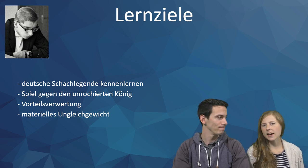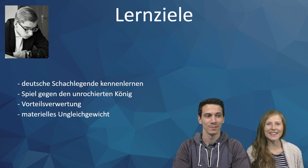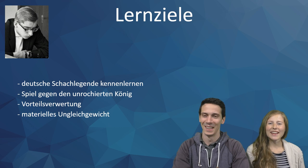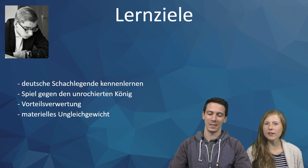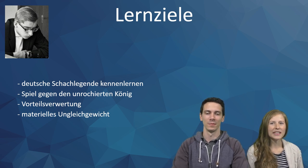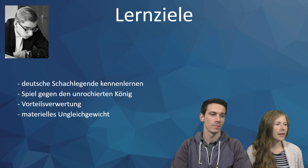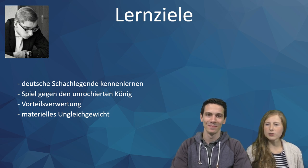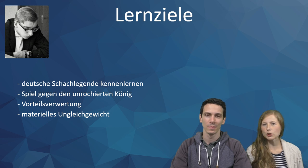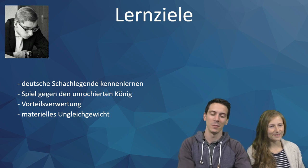Wir werden eine Partie intensiv analysieren, aber nicht ganz so tief wie Hübner es analysiert hätte. Wir werden uns mehrere Partie-Ausschnitte in Form von Taktikaufgaben anschauen. In der Partie wird es unter anderem gehen um das Spiel gegen den unrochierten König. Wir werden uns außerdem mit der Vorteilsverwertung auseinandersetzen und ein bestimmtes materielles Ungleichgewicht näher betrachten. Los geht's mit den Taktikaufgaben.